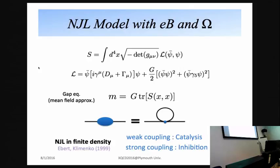Based on this setup, we discuss the NJL model under the presence of magnetic field and rotation. In the mean-field approximation we obtain the one-loop gap equation. Solving the gap equation gives the dynamical mass as a function of magnetic field and rotation. We know that the NJL model at finite density with weak coupling leads to magnetic catalysis, while with strong coupling it leads to inverse magnetic catalysis. Following this, we check these two cases with rotation.